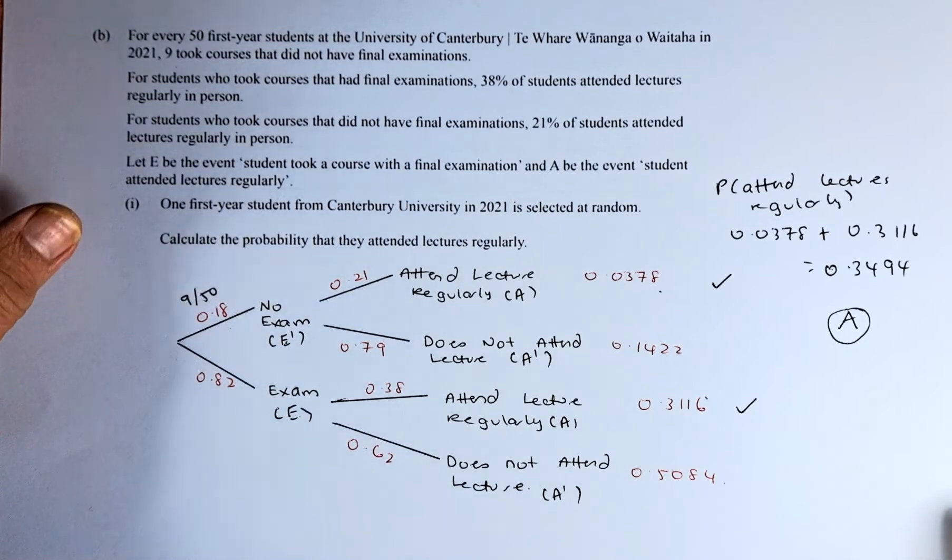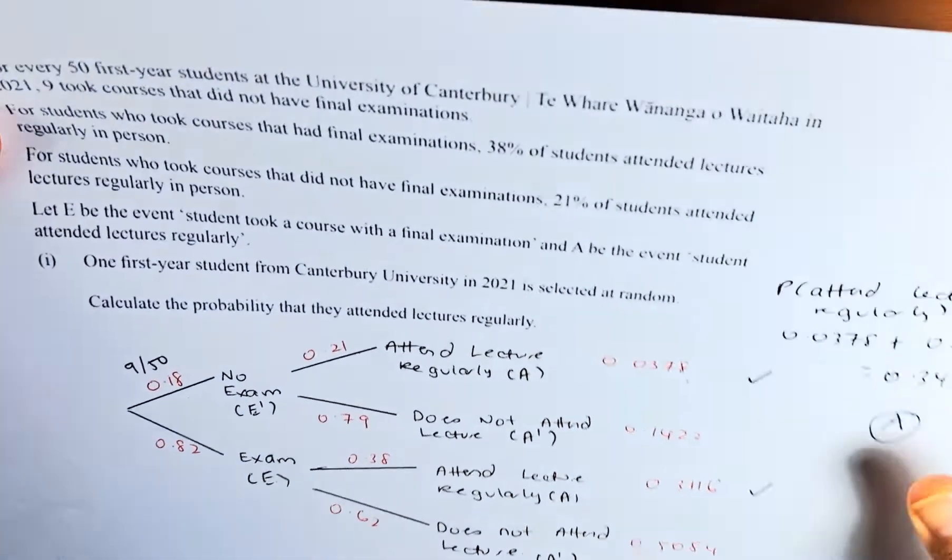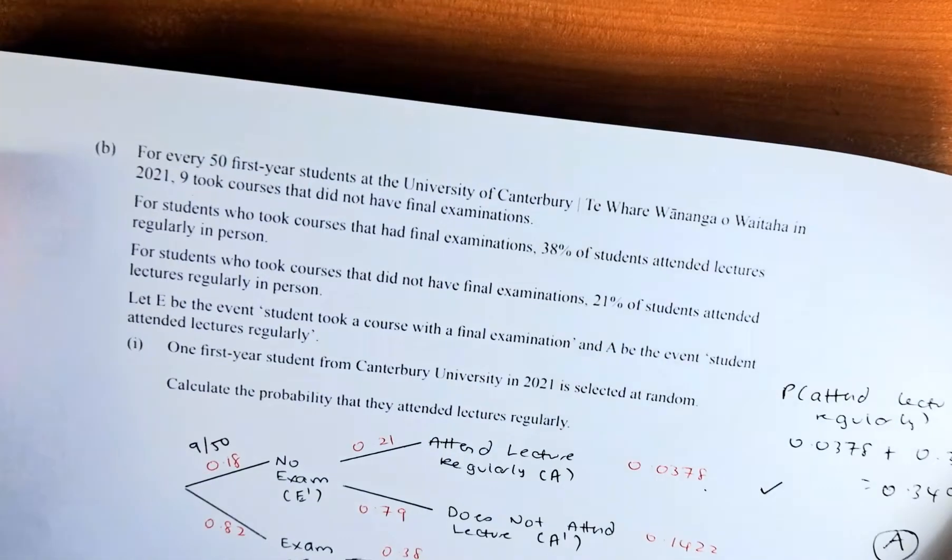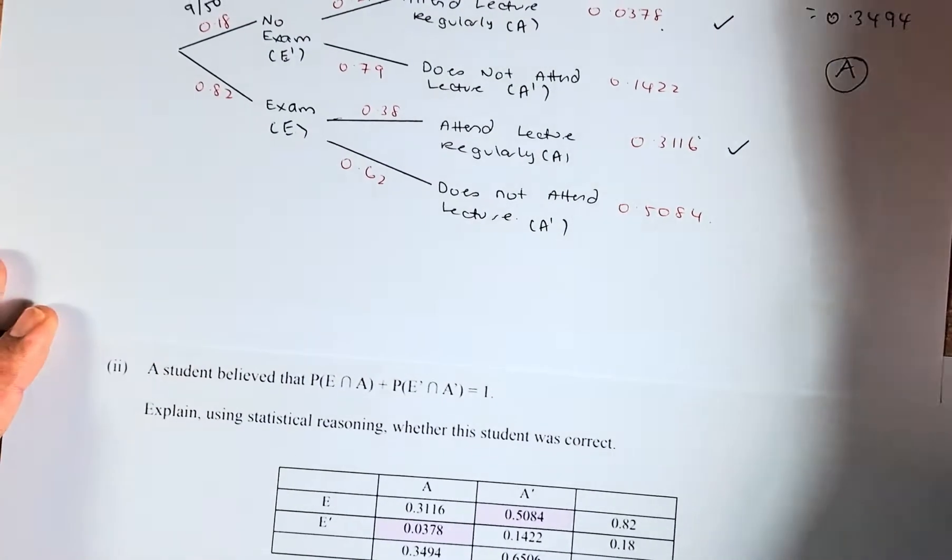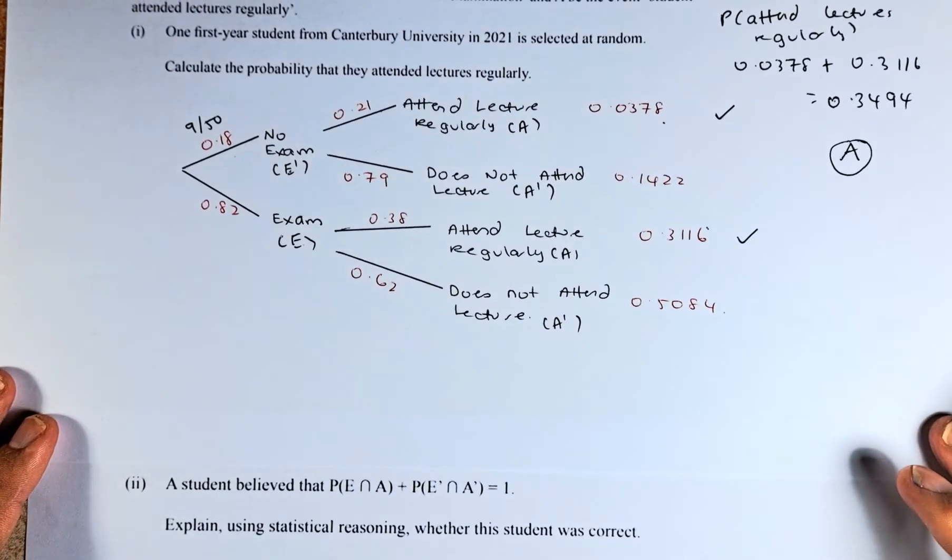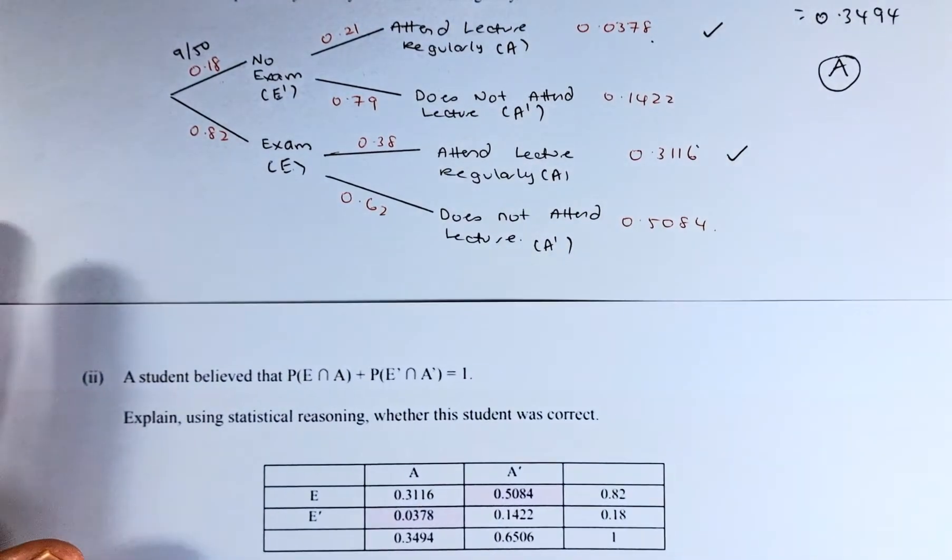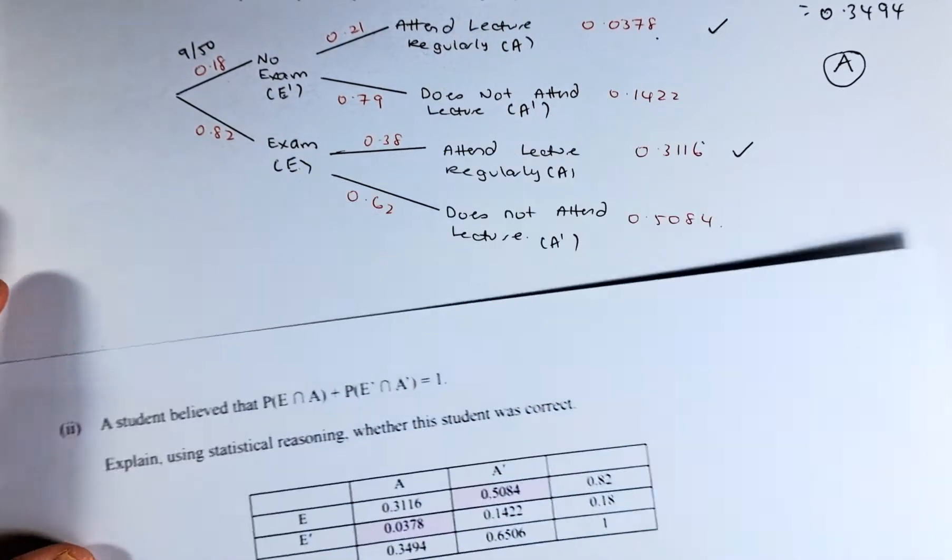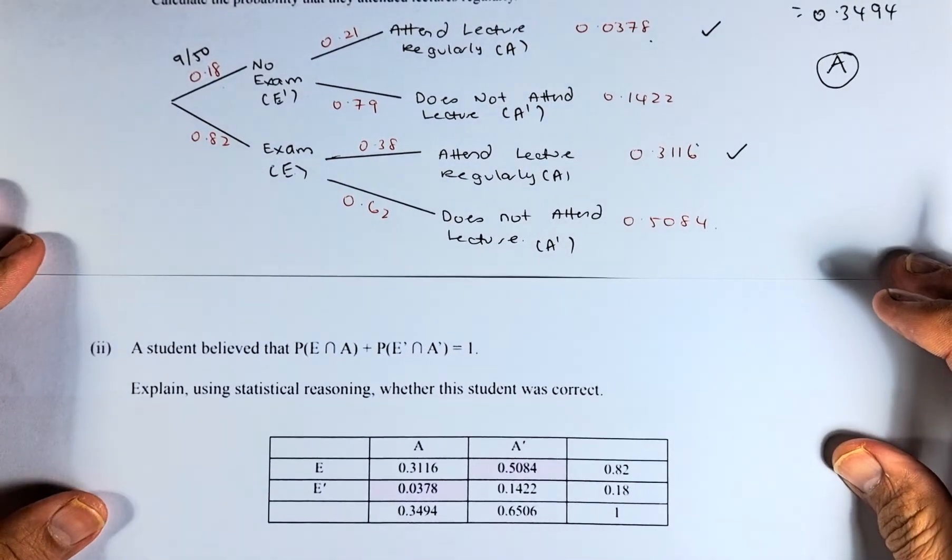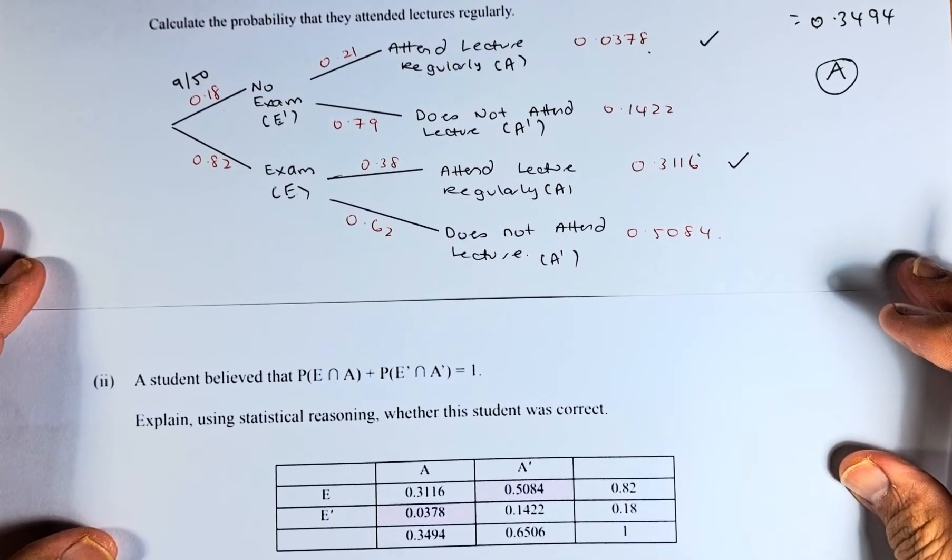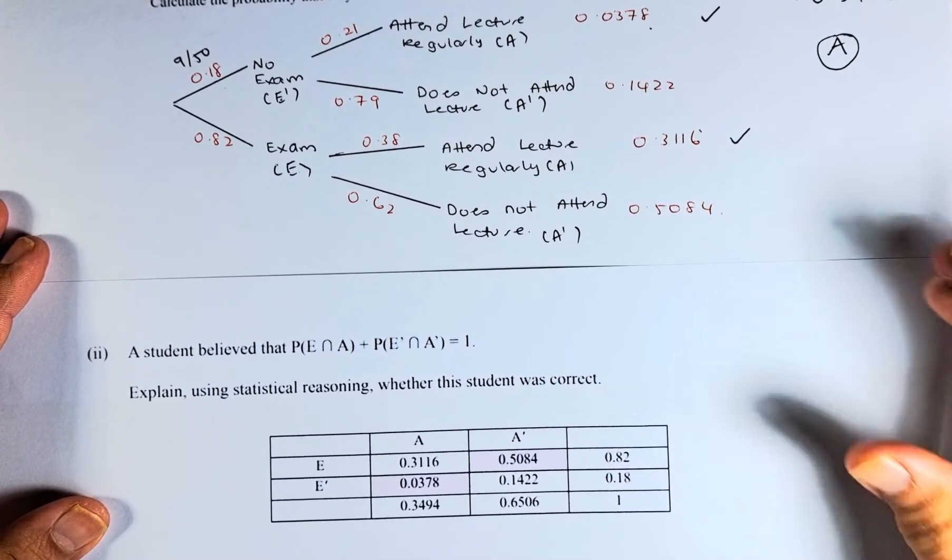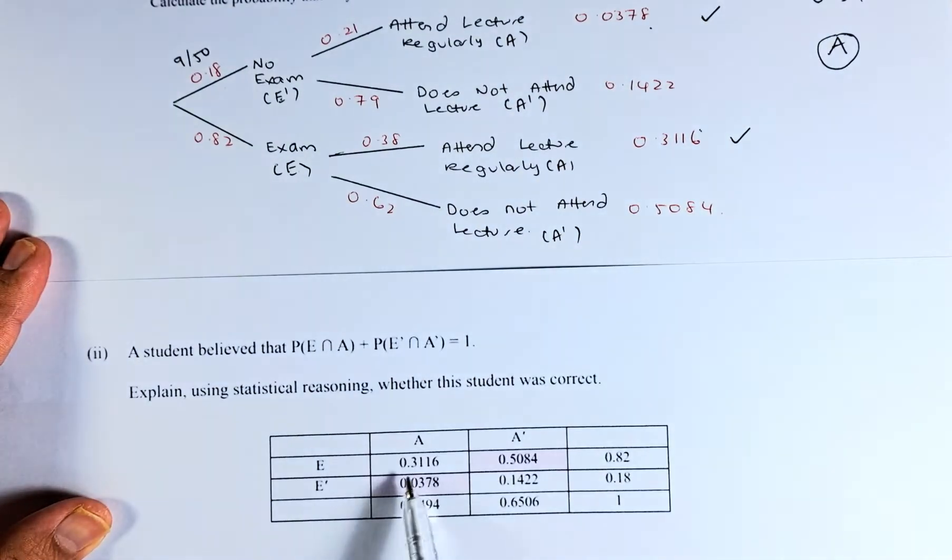Now we're going to do part 2 of the question. I'm just going to bring down the question. We're going to adjust some paper. You can either do from the probability tree or you can actually use the table. So, all these numbers are put in this table here.